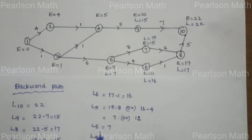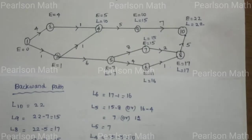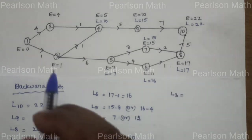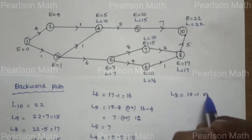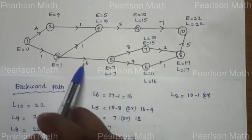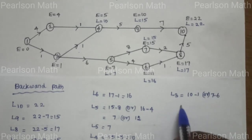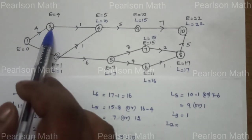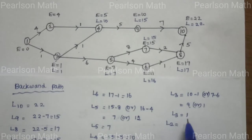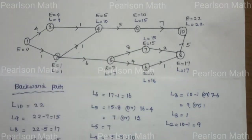L3: path 4 to 3 gives 10 minus 1 equal to 9. Second condition, path 5 to 3 gives 7 minus 6 equal to 1. The minimum number is 1, so L3 is equal to 1. L2: L2 is equal to 4. L1: considering L3 equal to 1, L1 is equal to 0.